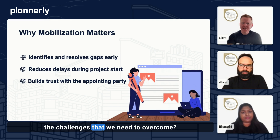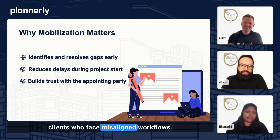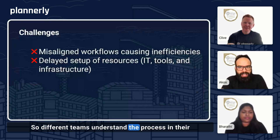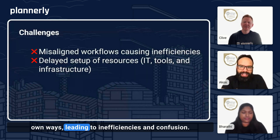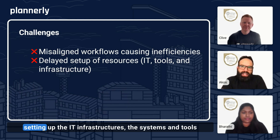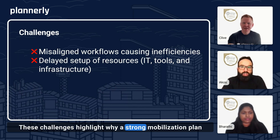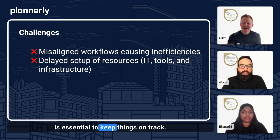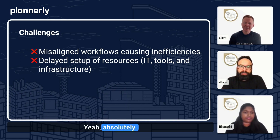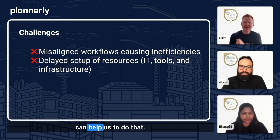Akos, what do you see as some of the challenges that we need to overcome? I've seen this happen with clients who face misaligned workflows, where different teams understand the process in their own ways, leading to inefficiencies and confusion. On top of that, I've seen delays in setting up the IT infrastructure — the systems and tools — which can stall progress right at the start. These challenges highlight why a strong mobilization plan is essential to keep things on track, and a solid mobilization plan in place can help us to address them early.